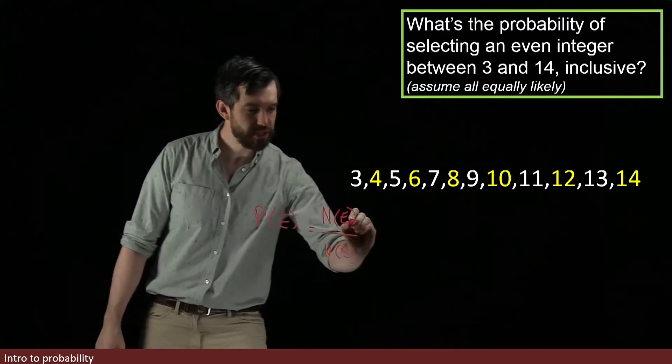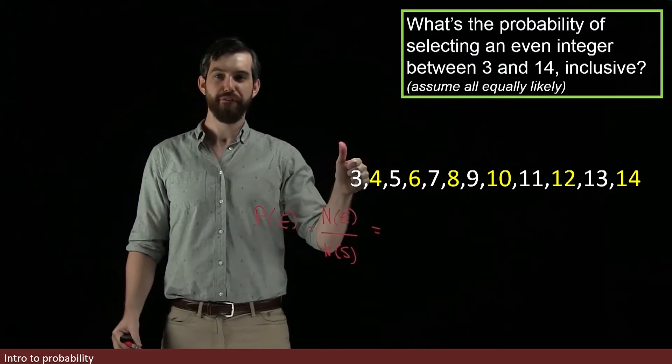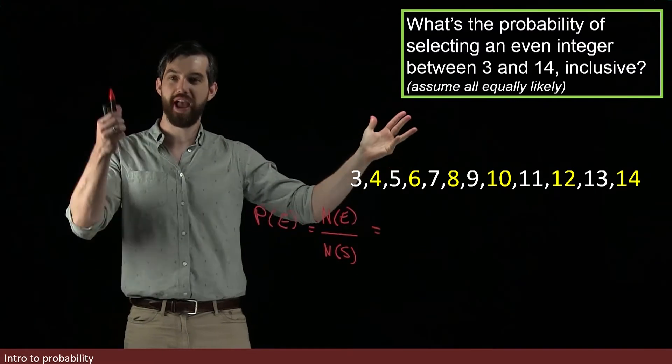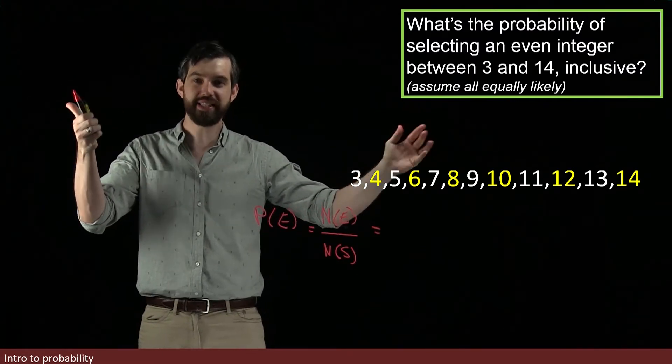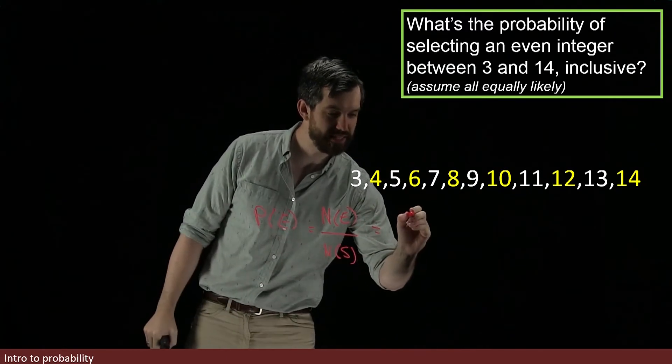We have to do these two countings. Let's count the even ones first. I've got 4, 6, 8, 10, 12, and 14. That looks like 6 evens are appearing here. So this is going to give me a 6.